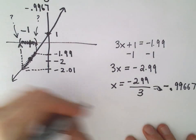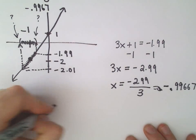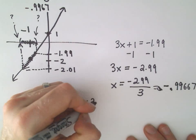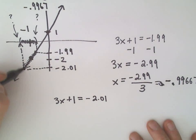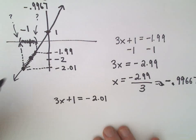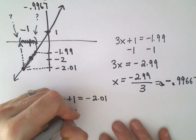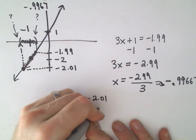And let's see, if we figure out the other x value, we'll just do 3x plus 1. We'll set that equal to negative 2.01. Again, we want to figure out what x value gives us that y value. Well, we can subtract 1 from both sides. That'll give us negative 3.01.